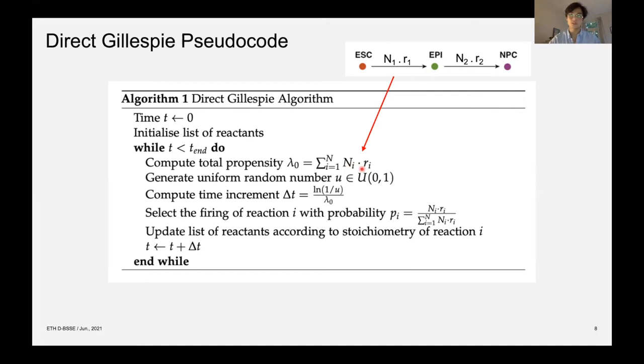So it's just the number of reactants in the given channel i times the reaction rate of that channel i. Using this total propensity, we compute the small time increment delta T in which we expect the next reaction to take place. And then we select a firing of a reaction i with a probability P_i. And this probability is proportional to the propensity of that reaction channel.